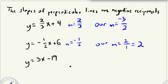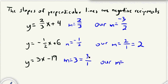For the last example, the slope of this one is positive 3. We really want to see that as a fraction, so if we write a whole number as a fraction, we just put it over 1 — so the slope is 3 over 1, which equals 3. We're going to flip that, going from 3 over 1 to 1 over 3. And since this is positive, our slope needs to be negative. So the slope of the line that's perpendicular to this one would be negative 1 over 3.